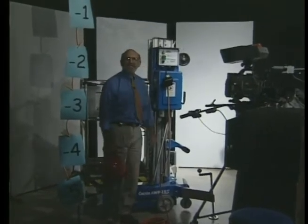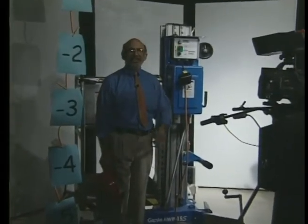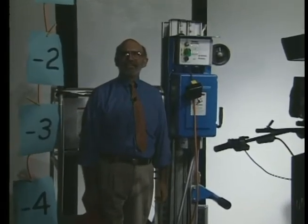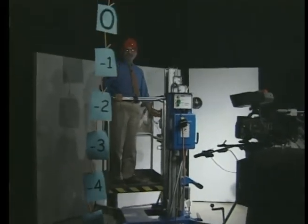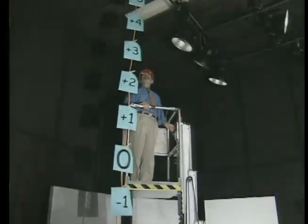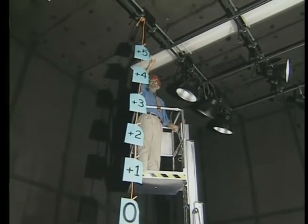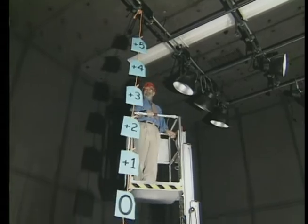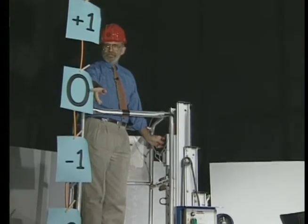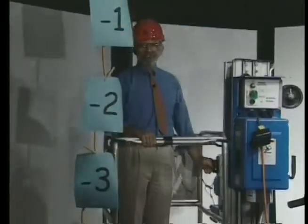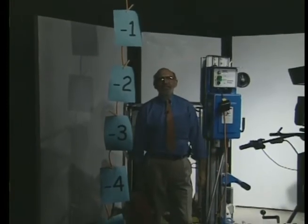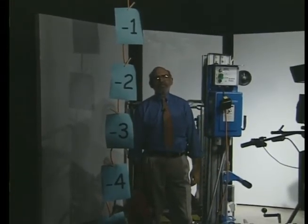Ever since I knew they had this thing, I've been looking for an excuse to try it, and telling you about the number line provided just that excuse. Here we go. Wow, where's my oxygen mask? We're up at plus five. Zero — the origin. Plus two. Minus two. I guess I've gotten the ride I wanted, and you got to see a little bit about the number line. Now you have an idea of how the number line works.